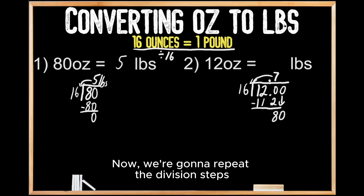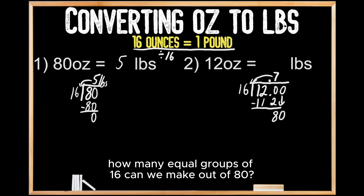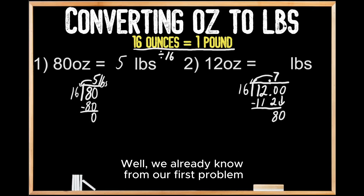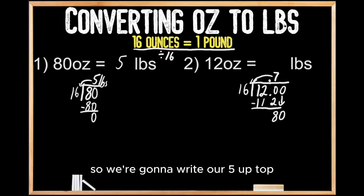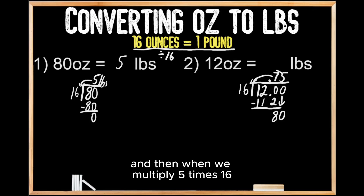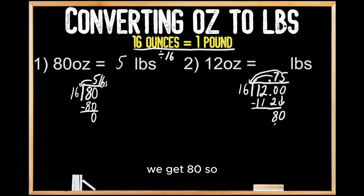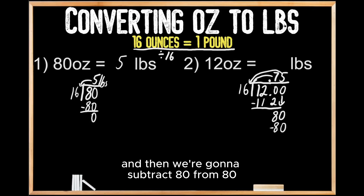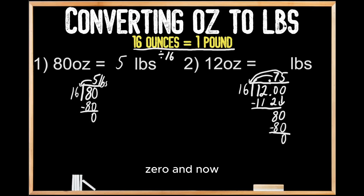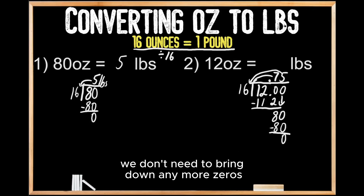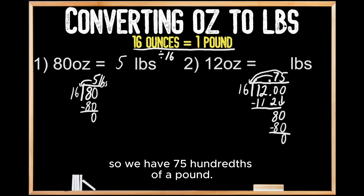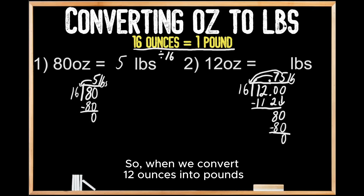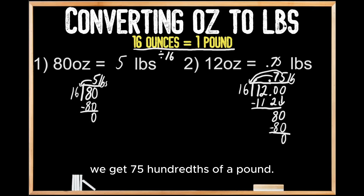Now we repeat the division steps: how many equal groups of 16 can we make out of 80? We already know from our first problem that we can make five equal groups of 16 out of 80. So we write our 5 up top, multiply 5 times 16 to get 80, write our 80 down, and subtract 80 from 80, which leaves us with zero. Since we don't have any remainder, we're done. Our answer is 0.75, or 75 hundredths of a pound. So when we convert 12 ounces into pounds, we get 75 hundredths of a pound.